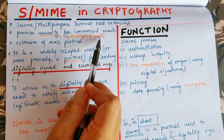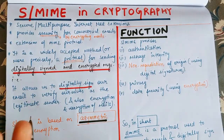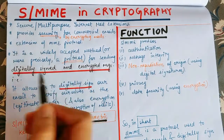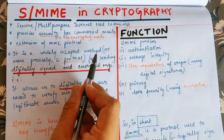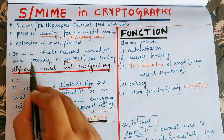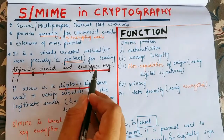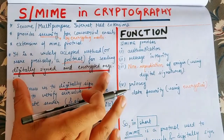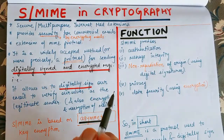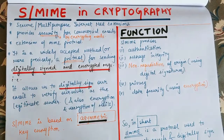SMIME is an upgraded version and extension of MIME protocol. More precisely, it is a protocol for sending digitally signed and encrypted messages. The messages we are sending are encrypted so that nobody can understand our message and nobody can misuse it.